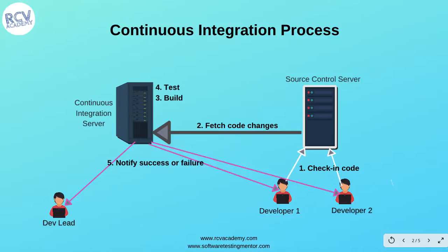If all of those tests pass after the code check-in, build, and test, then the team is notified with the success or failure. The email goes to the dev lead, developers, and other members of the agile team. This is how the continuous integration process is implemented in any agile or development team within the organization.